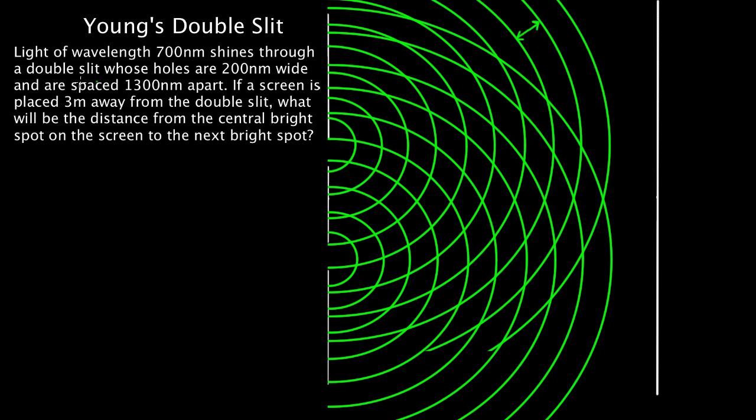Shines through a double slit whose holes are 200 nanometers wide. That means from here to there is 200 nanometers. And they're spaced 1,300 nanometers apart. That means from the center of one to the center of the other is 1,300 nanometers.